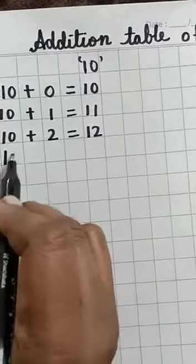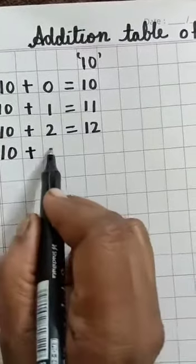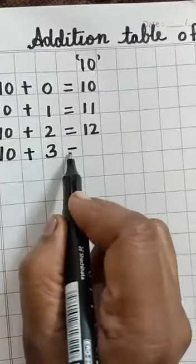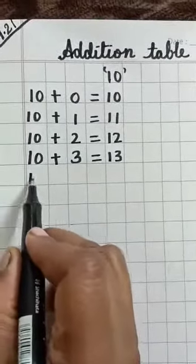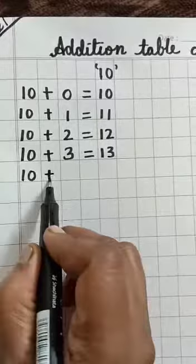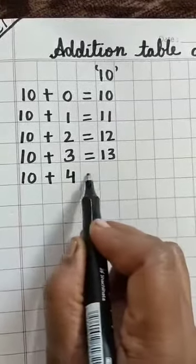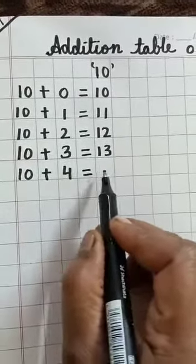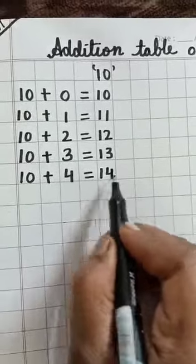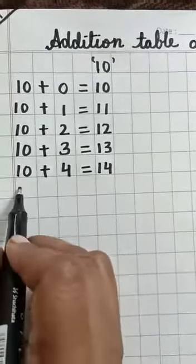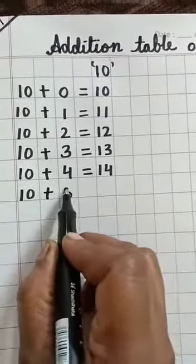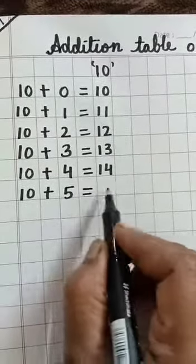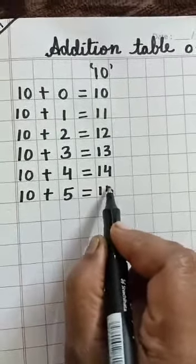10 plus 3 equal to 13. 10 plus 4 equal to 14. 10 plus 5 equal to 15.